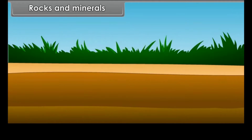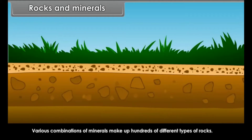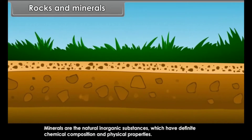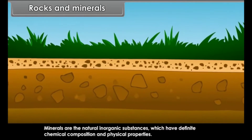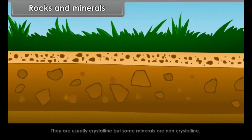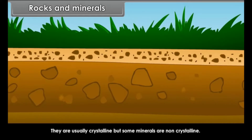Rocks and Minerals. Rock is the hard material that makes up the Earth's crust. Various combinations of minerals make up hundreds of different types of rocks. Rocks are made up of individual substances called minerals, found mostly in solid state. Minerals are natural inorganic substances which have definite chemical composition and physical properties — they are usually crystalline, but some minerals are non-crystalline.